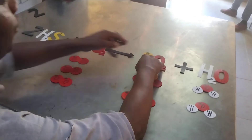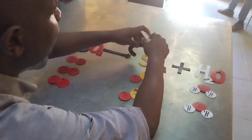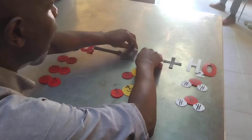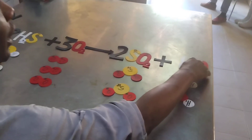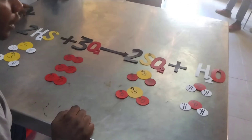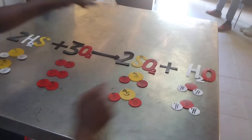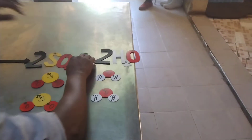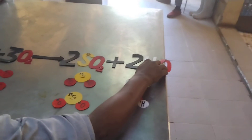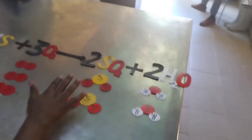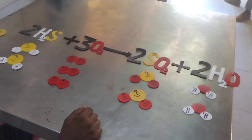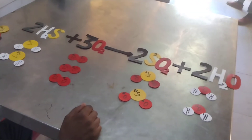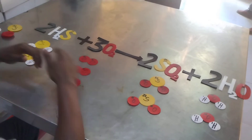We have two molecules of sulfur dioxide, so we place a two there. And we have two molecules of water, so we add a two there as well. Our equation is now fully balanced: 2H₂S + 3O₂ → 2SO₂ + 2H₂O.